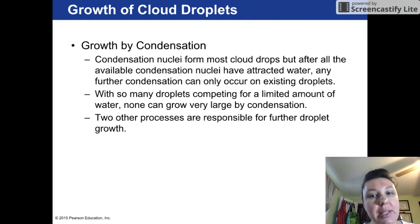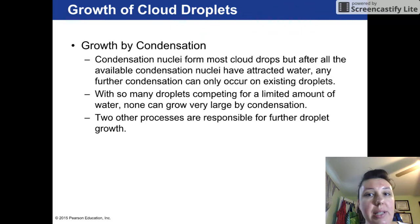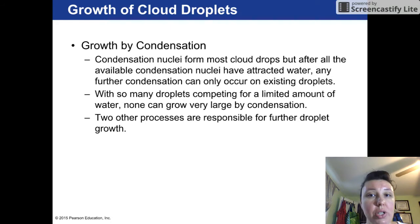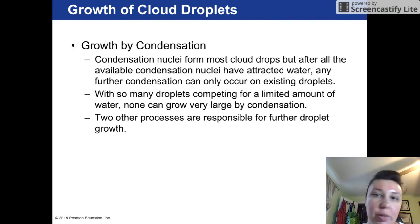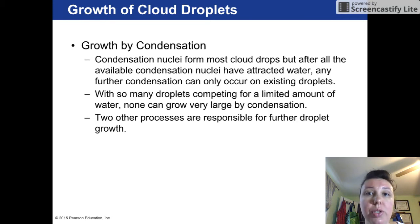These two processes are known as the cold cloud process and the warm cloud process. The cold cloud process is also known as the Bergeron process, named after the person who authored the original paper explaining how this process works. The warm cloud process is sometimes also referred to as the collision coalescence process.